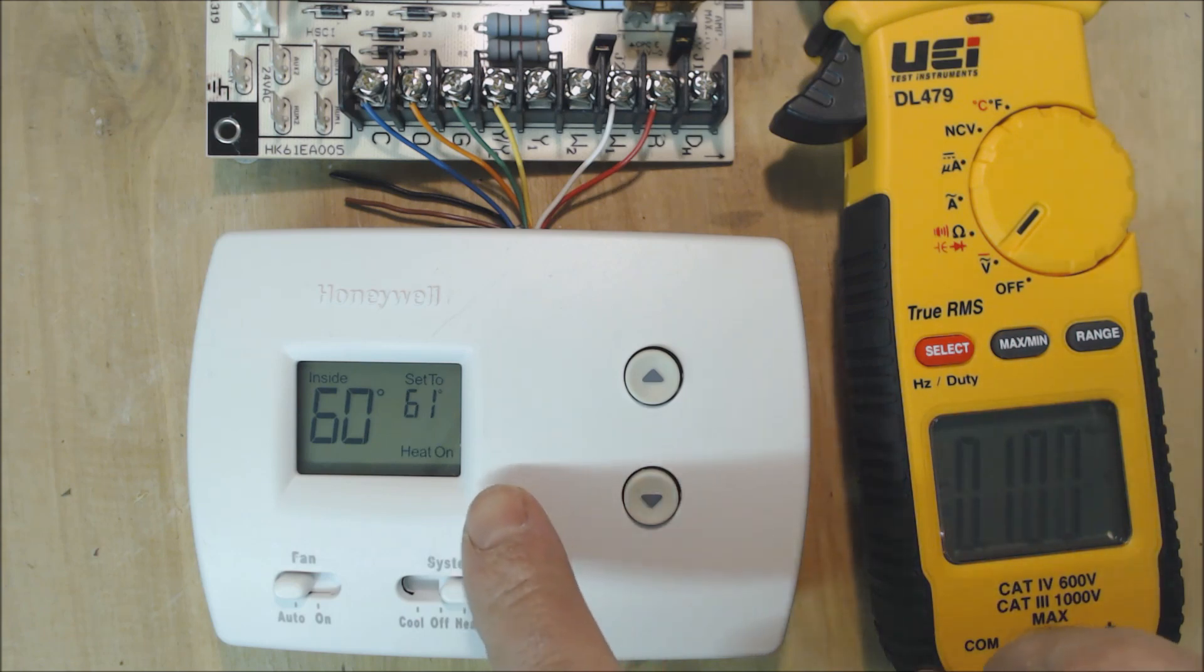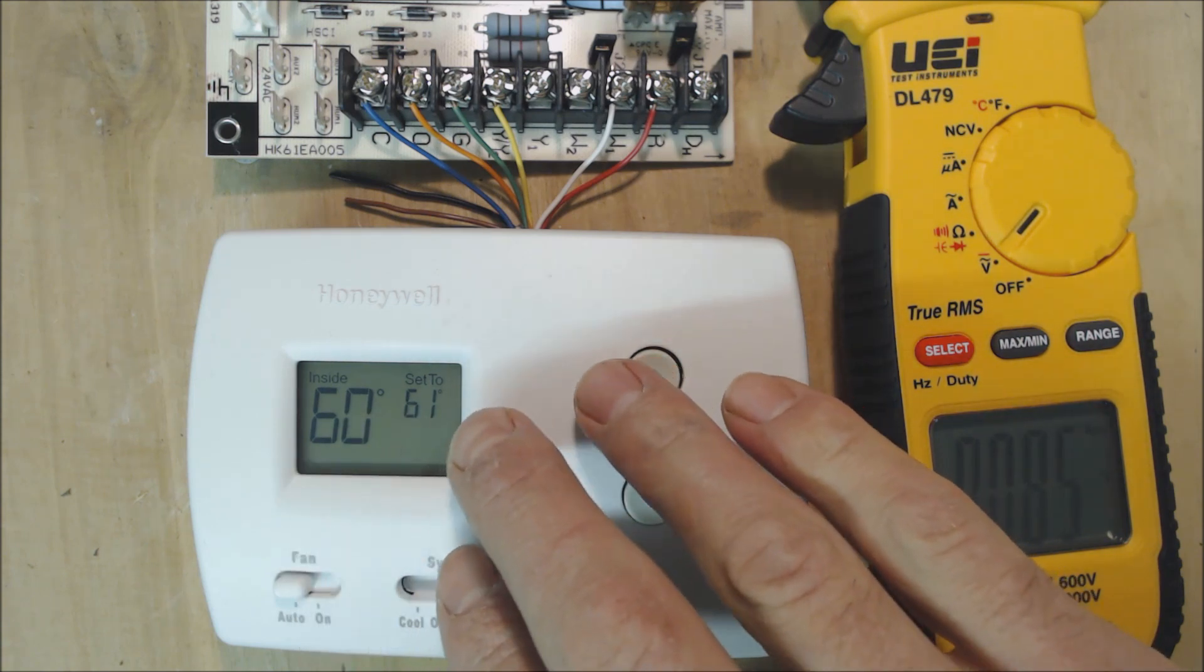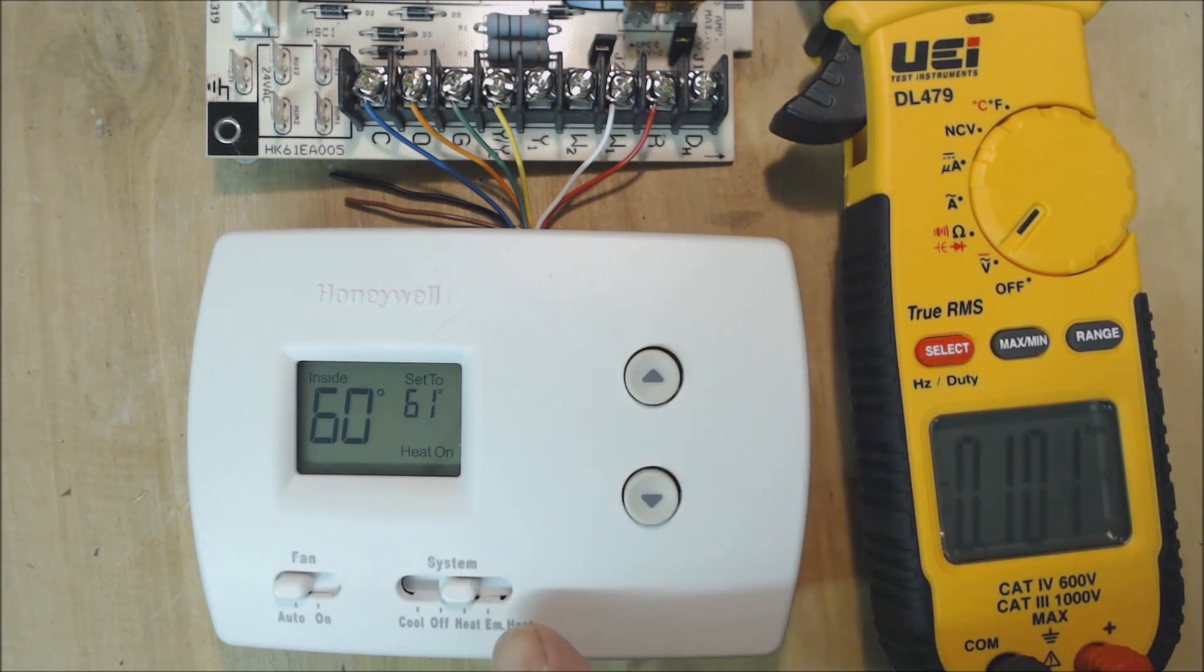If this thermostat is only calling for one degree above what it is in the room, this thermostat is going to run the heat pump only. It's not going to run the auxiliary heat, and it's definitely not going to run emergency heat because you don't have it set on emergency heat right now.